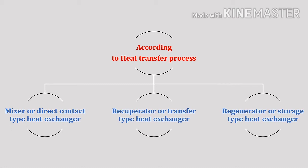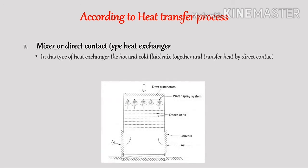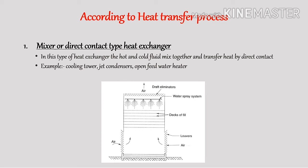The first type is the mixer or direct contact type heat exchanger. In this type, the hot and cold fluids mix together and transfer heat by direct contact. Hence there is simultaneous mass transfer and heat transfer. This type is used where mixing between the fluids is either desirable or harmless. Cooling tower, jet condenser, and open feed water heater are examples. The figure shows a cooling tower, which is one type of direct contact heat exchanger.